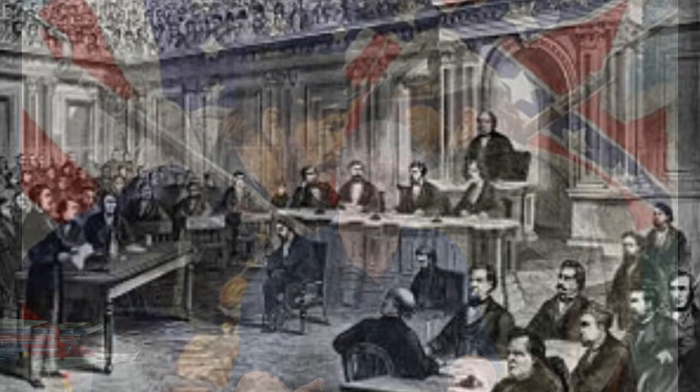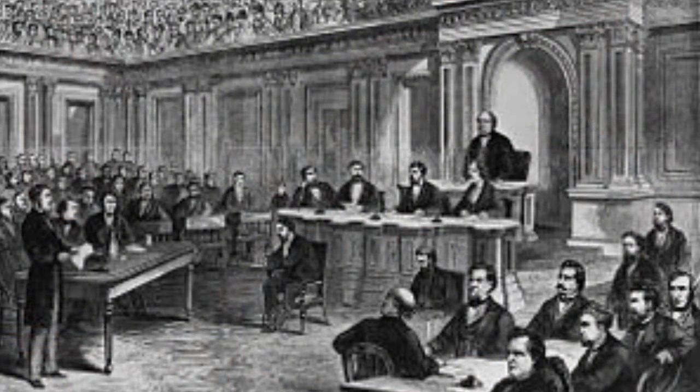Johnson challenged the Tenure of Office Act by firing the Secretary of War, Edwin M. Stanton, who supported the Congressional Reconstruction Plan, in February of 1868. The House of Representatives voted to impeach Johnson for refusing to uphold the Tenure of Office Act and for trying to undermine the Reconstruction program. After more than two months of debate, the Senate vote was one vote short of conviction. So, even though we have impeached two presidents, both of them survived a trial in the Senate.